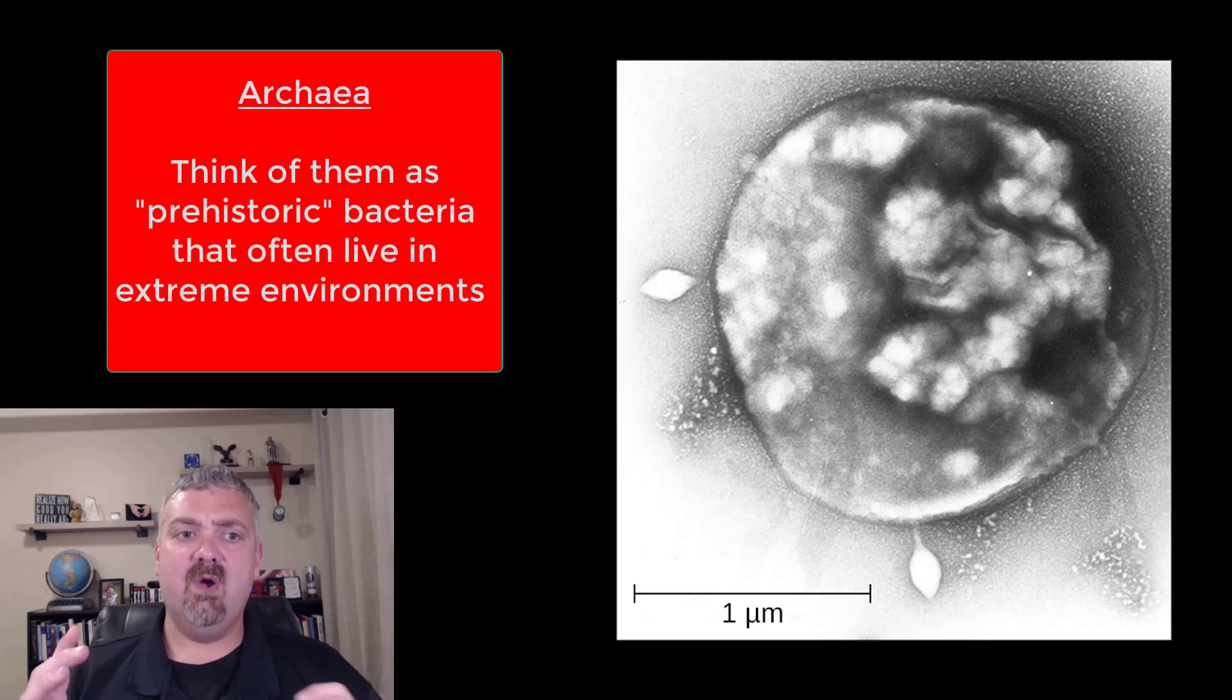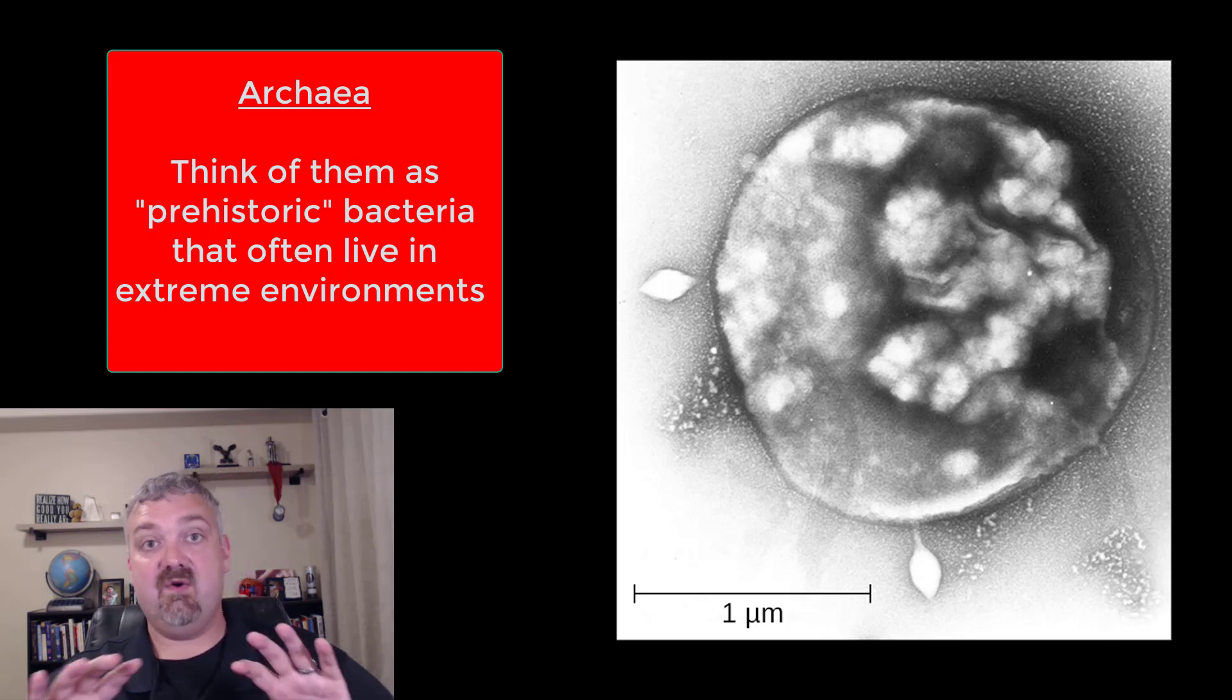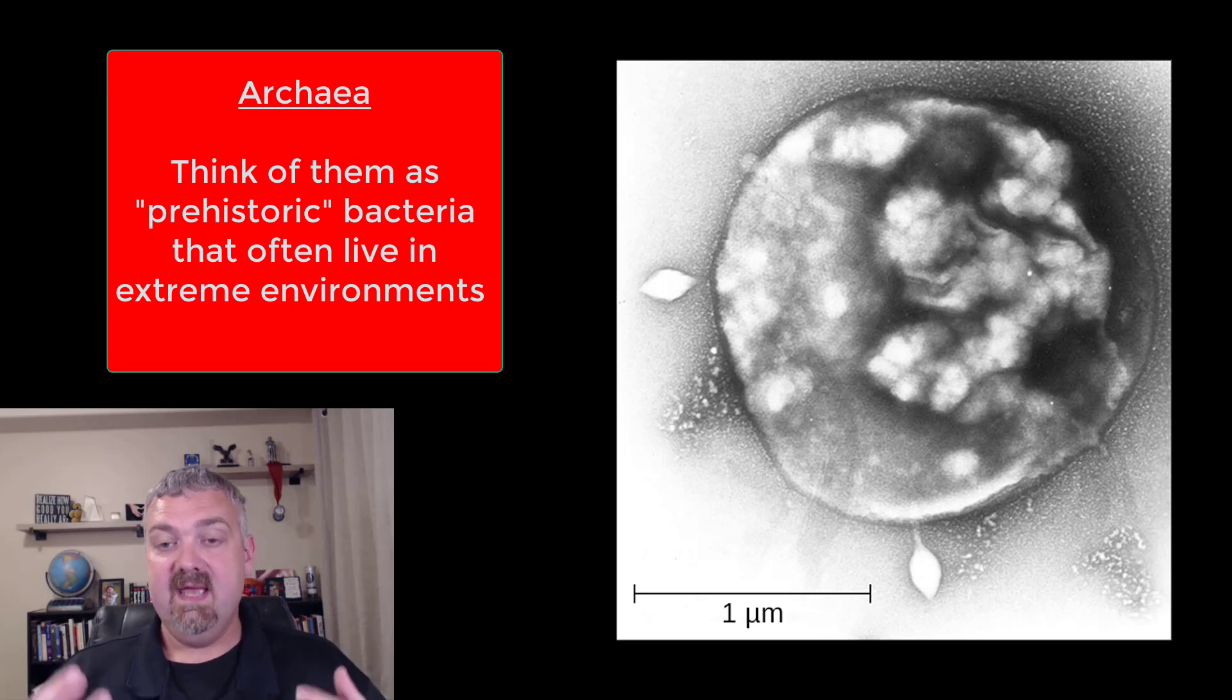Next we have the archaea. We will cover these less than anything else in the class. For years, we didn't believe that we even came into contact with them. I like to call them prehistoric bacteria. They're similar to bacteria. They don't have the same cell wall though. But most of them, at least the ones that we know about, live in pretty extreme environments. It's almost like they've been crowded out. Like the bacteria showed up, they were better at evolving and adapting. The archaea either had to go extinct or they had to find extreme environments to live in.